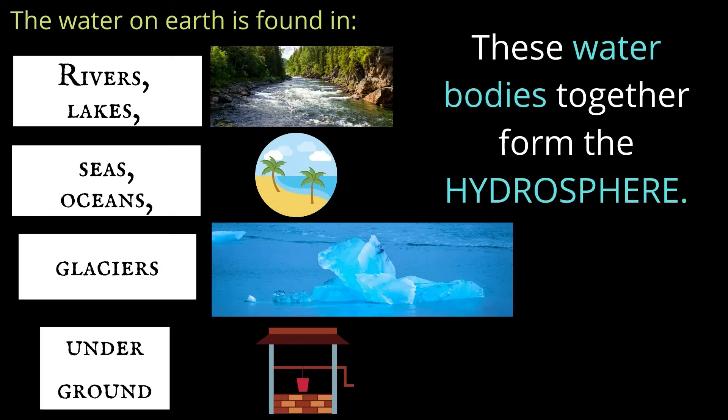If 71% of Earth is water, where is all this water found? It's found in rivers and lakes - I hope you have seen rivers and lakes in Chhattisgarh. Water is also found in seas, oceans, and glaciers. Can you see the glacier? If you dig the earth, you will find water underneath. Water is also found under the ground.